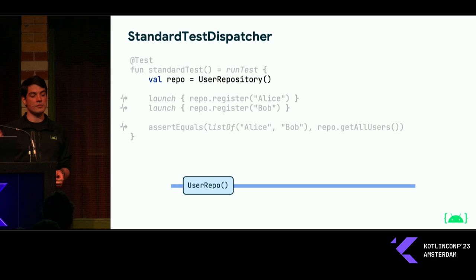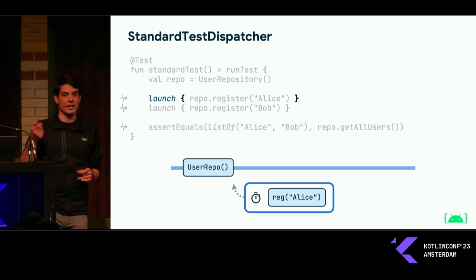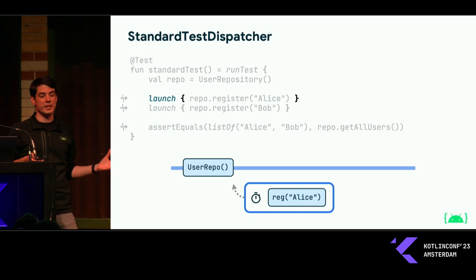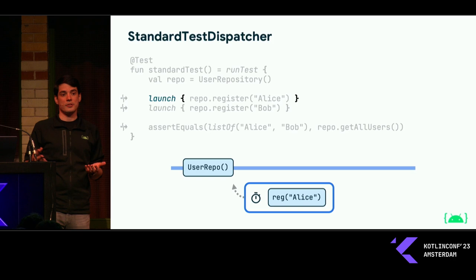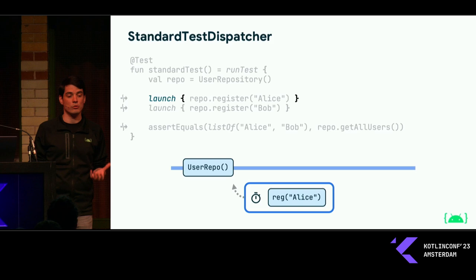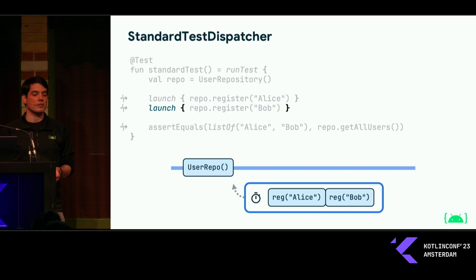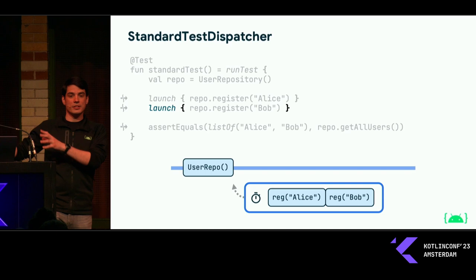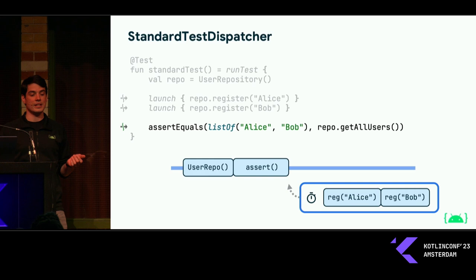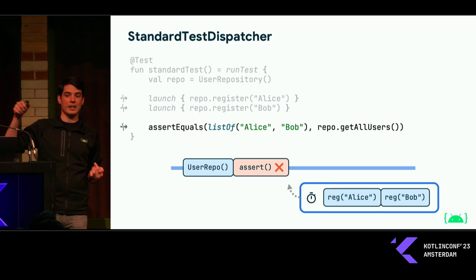Let's execute this. We start on the test thread, create a UserRepository, then launch a new coroutine on a StandardTestDispatcher — which means we don't start running it yet, we just place it on the scheduler to be executed later. Launch will return immediately without that new coroutine actually running. We keep running, go to the next launch, which also creates a new coroutine, puts it on the scheduler, and returns immediately. And that gets us to our assertion, which at this point will fail because we never actually registered those users — we just created coroutines that would have registered them.